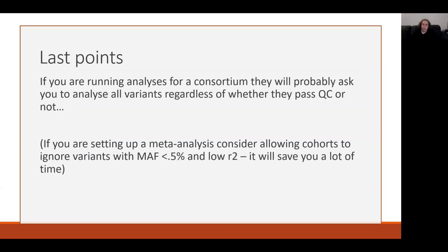Quite often when we're running imputation we are doing it for a consortium or a meta-analysis, and they will give you instructions about which reference panels to use and what to do. They will probably ask you to analyse all variants regardless of whether they pass QC or not. It's important to think about this, especially if you are using the TopMed references which have around 300 million variants — only around 8 to 10 million of those will typically be useful for GWAS, so you'll be running analysis and uploading results for many SNPs that won't be very useful for anyone.